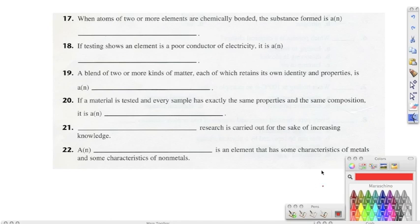Number seventeen says when atoms of two or more elements are chemically bonded, the substance that is formed is a compound. Number eighteen, if testing shows an element is a poor conductor of electricity, it is a non-metal. Number nineteen, a blend of two or more kinds of matter, each of which retains its own identity and properties, is a mixture.